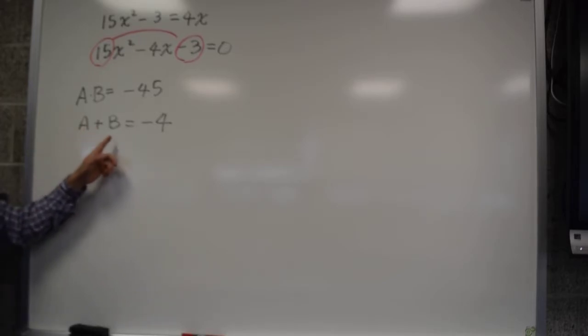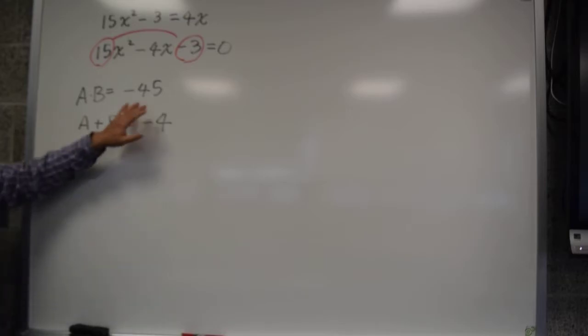So when you add the two numbers, one is negative and the other is positive, so you end up really doing a minus subtraction between the two because one is negative, the other is positive.